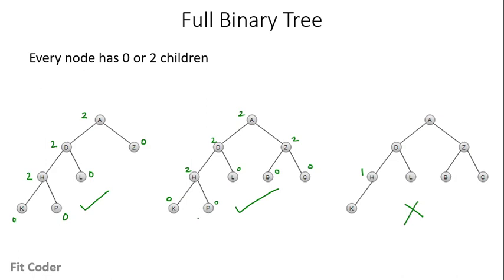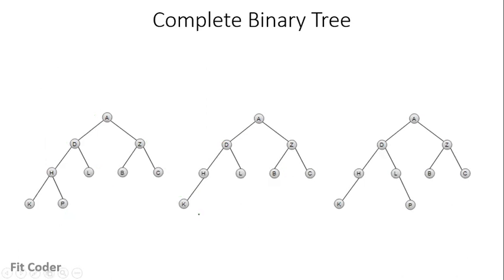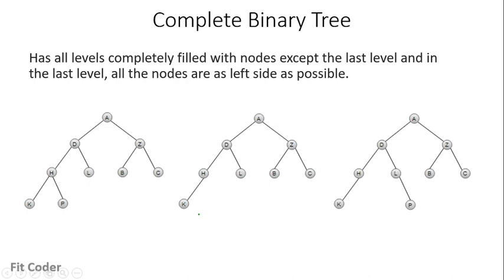The next type is complete binary tree. A complete binary tree is a tree in which all the levels are completely filled except the last level, and in the last level all the nodes are as far left as possible. In the first tree, level zero is full, level one is full, level two is full, and in level three it is not full but all the nodes are as far left as possible. So this is a complete binary tree.